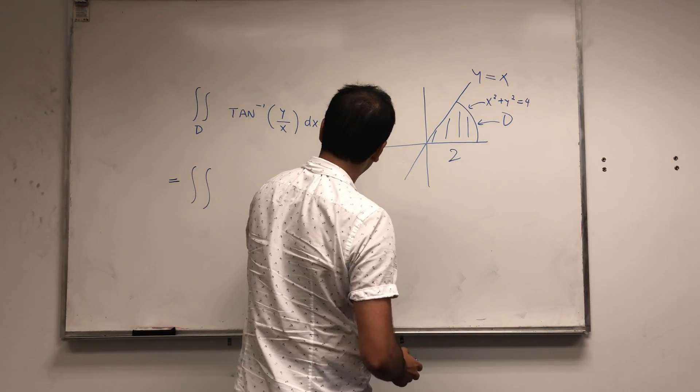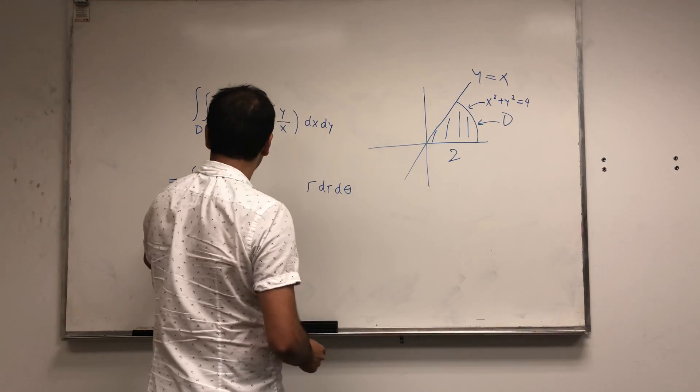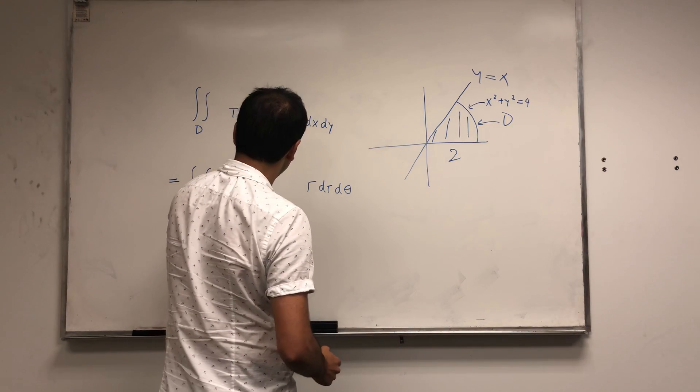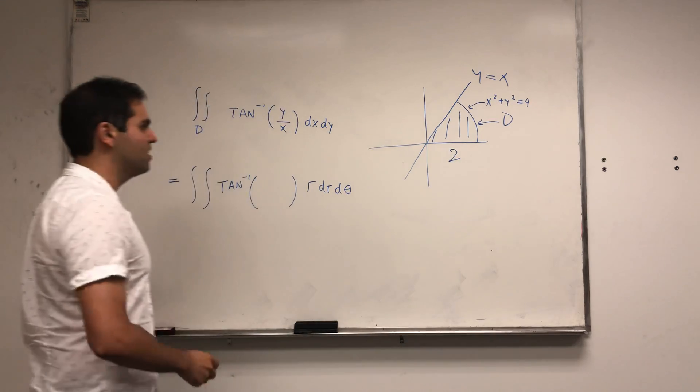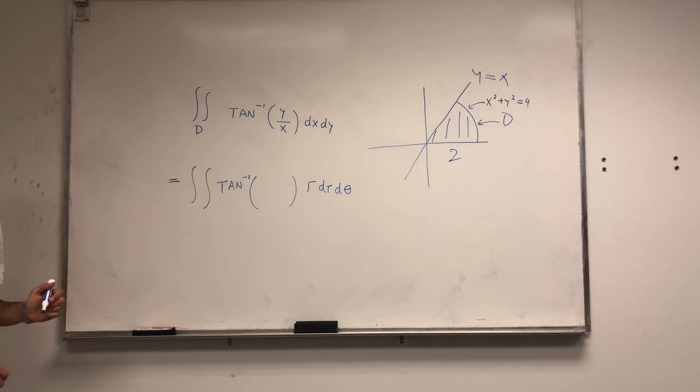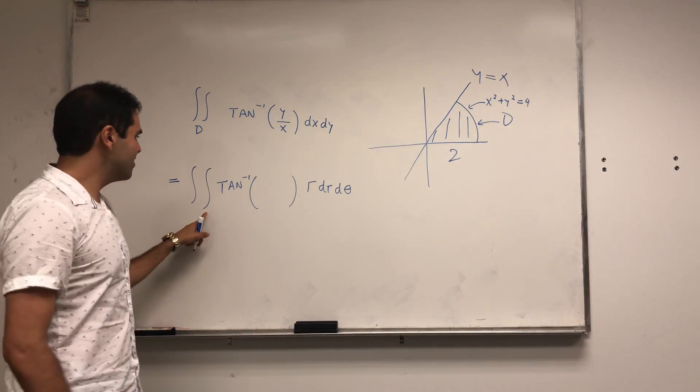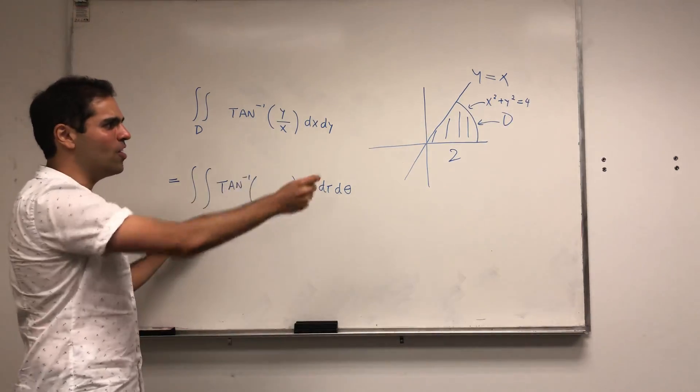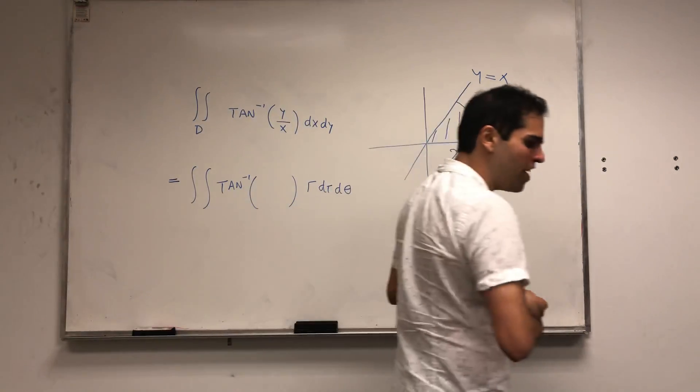The point is this becomes the integral of something r dr d theta, and arctangent we have to transform it a little bit. Okay, I'm trying to do too many things at the same time, so first let's figure out what r is.